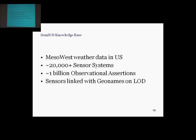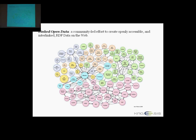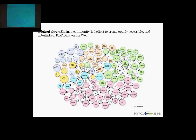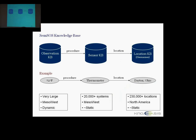We have 20,000 sensors coming from this data source. We have 10,000 of them connected on the linked data web. This is the linked open data — right here is GeoNames, which has geographical locations, and we actually have our sensor data set connected to this. Here's a rough mock-up of what the data sets look like. We have three: an observation knowledge base, a sensor knowledge base, and a location knowledge base. The observations have a procedure relationship to sensors, and sensors have a location relationship to facts within GeoNames.